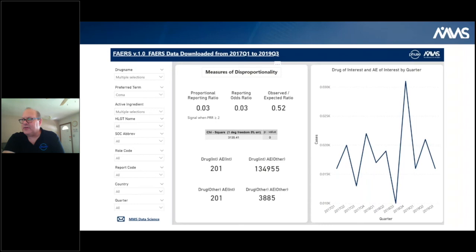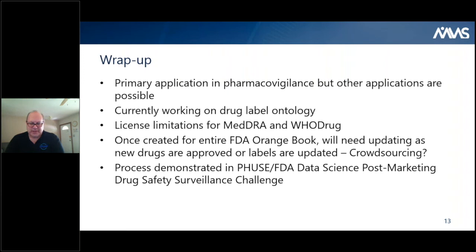The primary application we talked about is in pharmacovigilance, but other applications are possible. If we have this data organized, available, and freely available to companies, it can be used in other ways. Currently, we're working on this drug label ontology. We did this for TNF inhibitors — we have a drug class and within that drug class we've encoded all adverse drug reactions from the labels. So information that was unstructured now has structure and we can actually utilize this going forward.